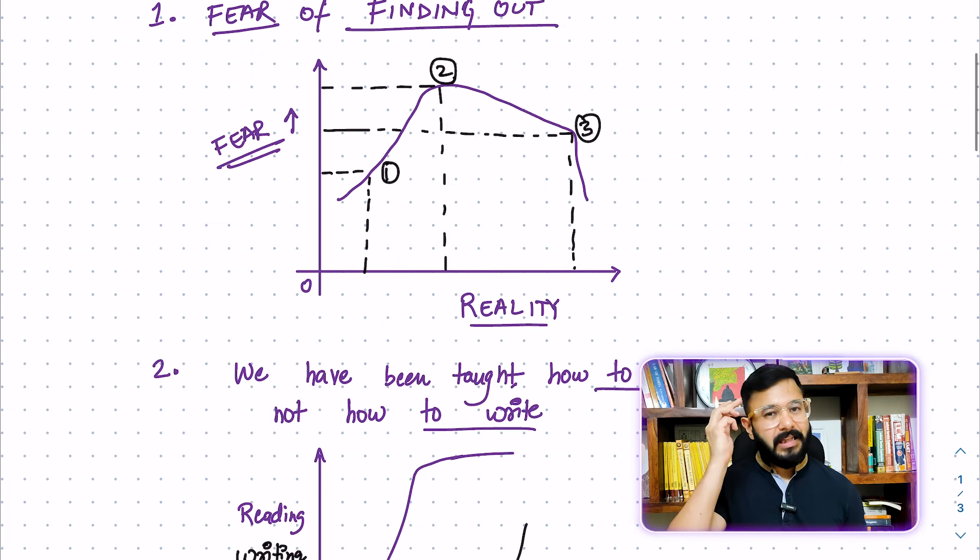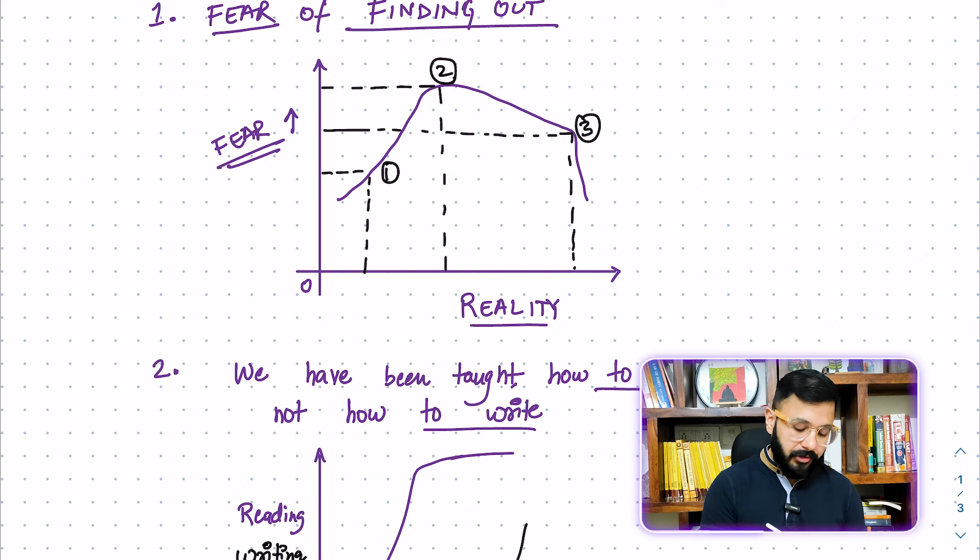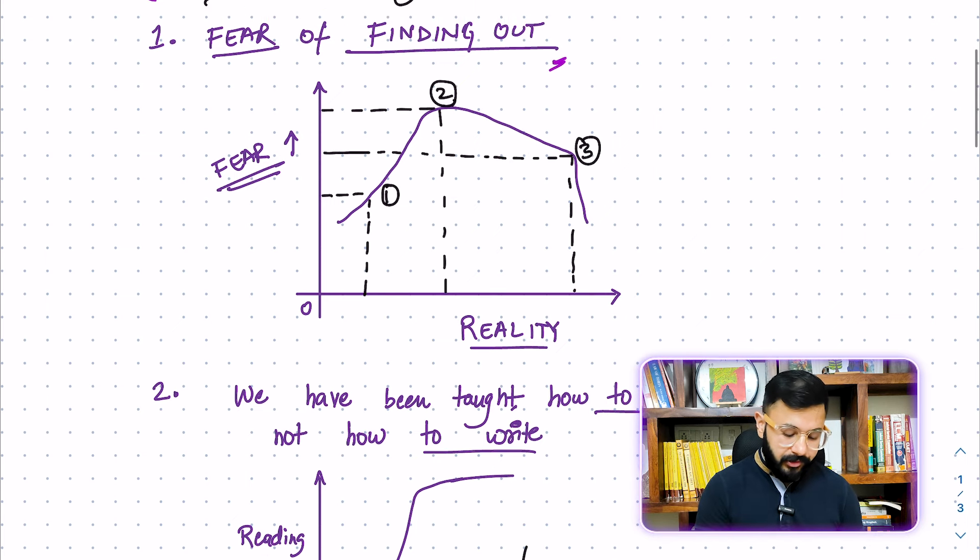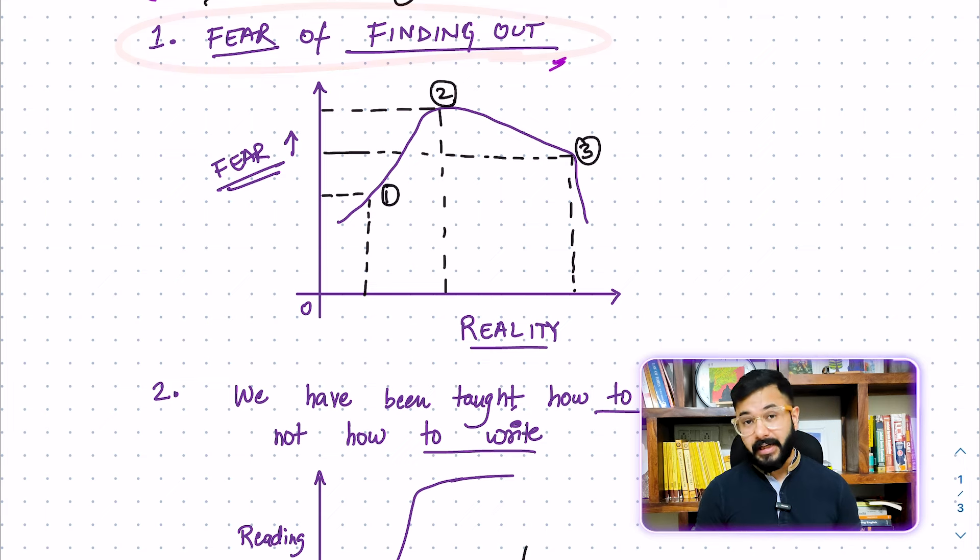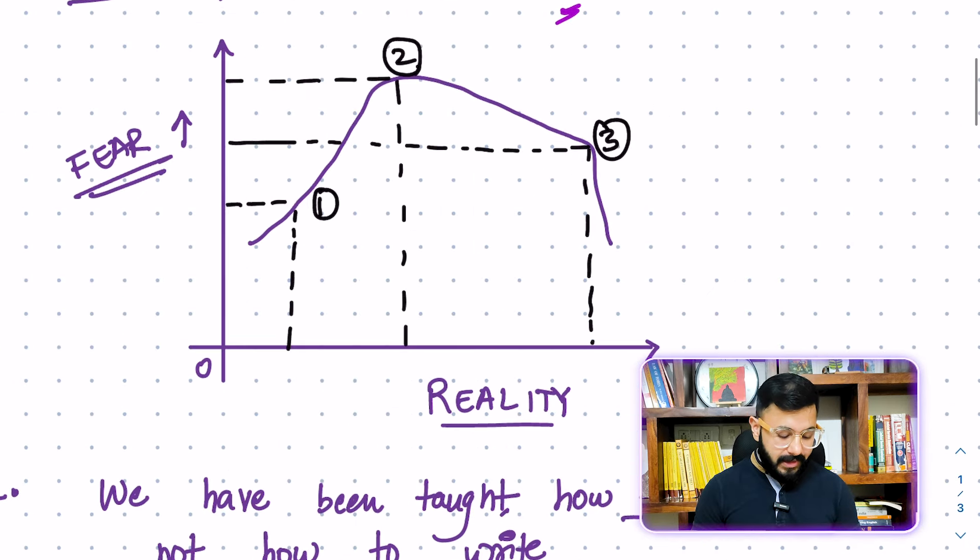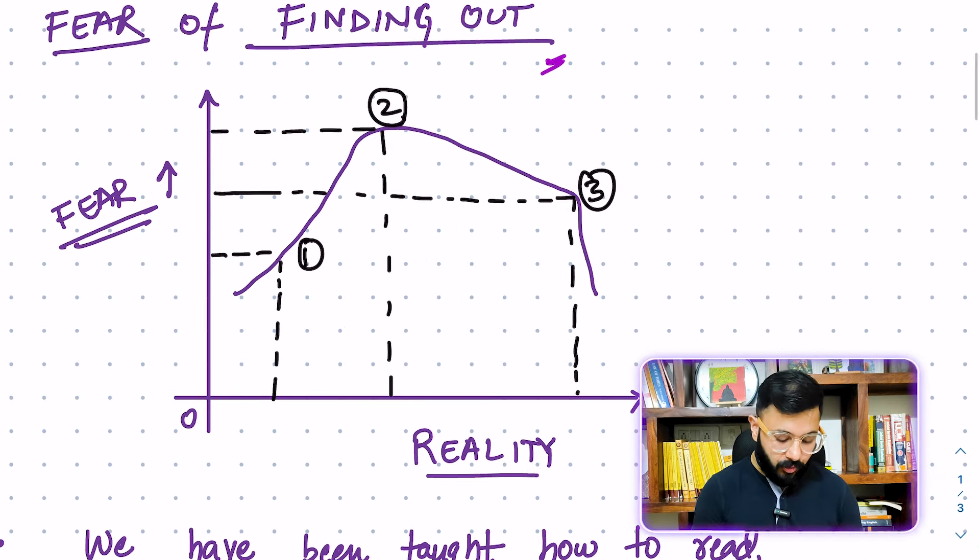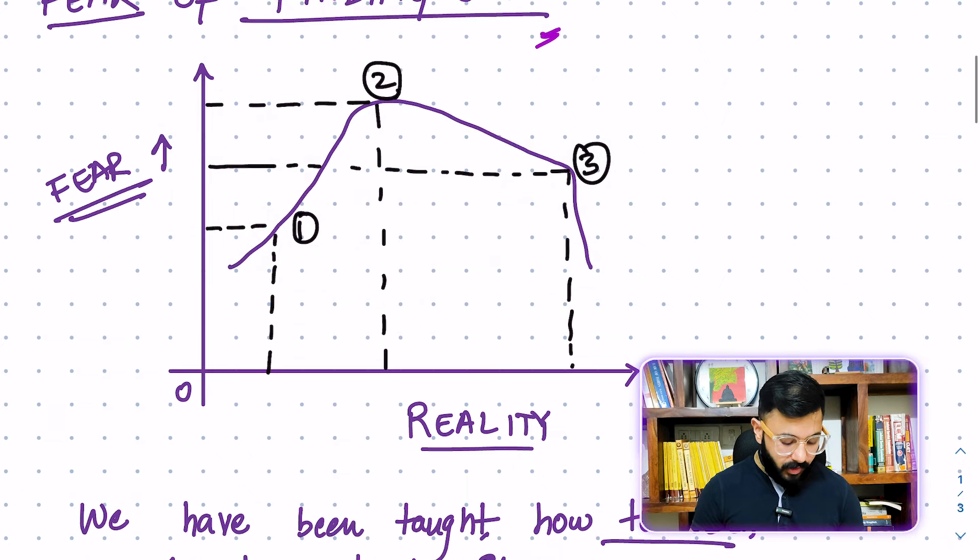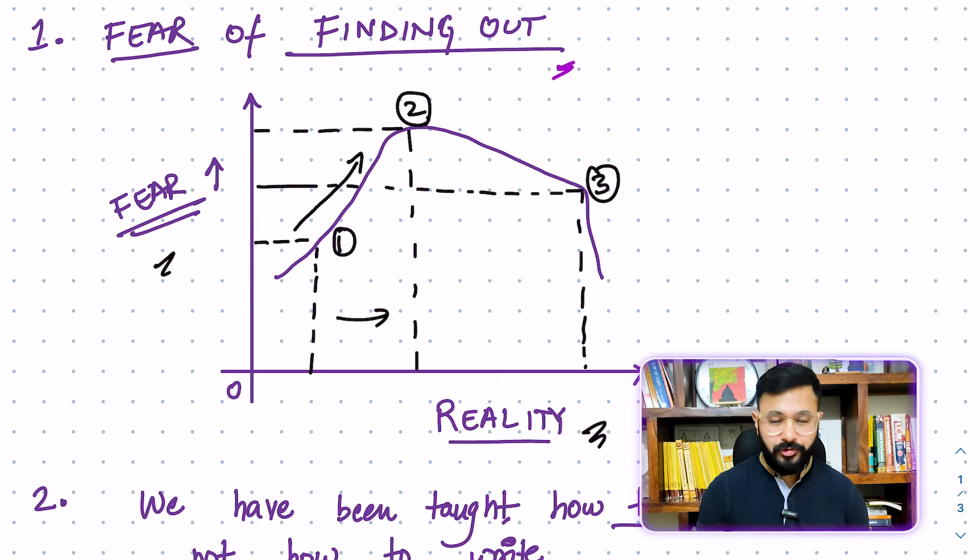The first psychological mental reason behind something that is holding you back is the fear of finding out. This is something that we don't even realize is actually affecting us, but it is. Let's try and take help of this graph to understand it better. Now, on the y-axis, you have fear. On the x-axis, you have reality. The more you move towards reality, the more you will be fearful. Your fear rises up to a certain extent.